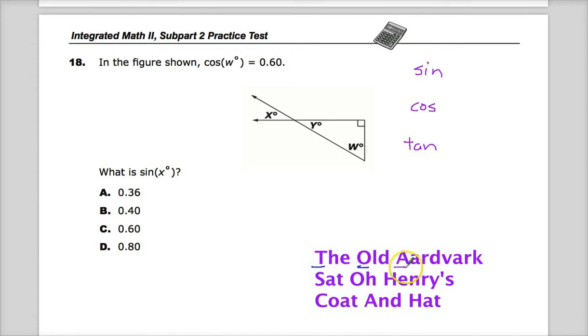I could picture the old aardvark kind of curled up - that's just how my brain works. Anyway, sine based on what I'm given here is opposite over hypotenuse, and cosine would be the adjacent side over hypotenuse.